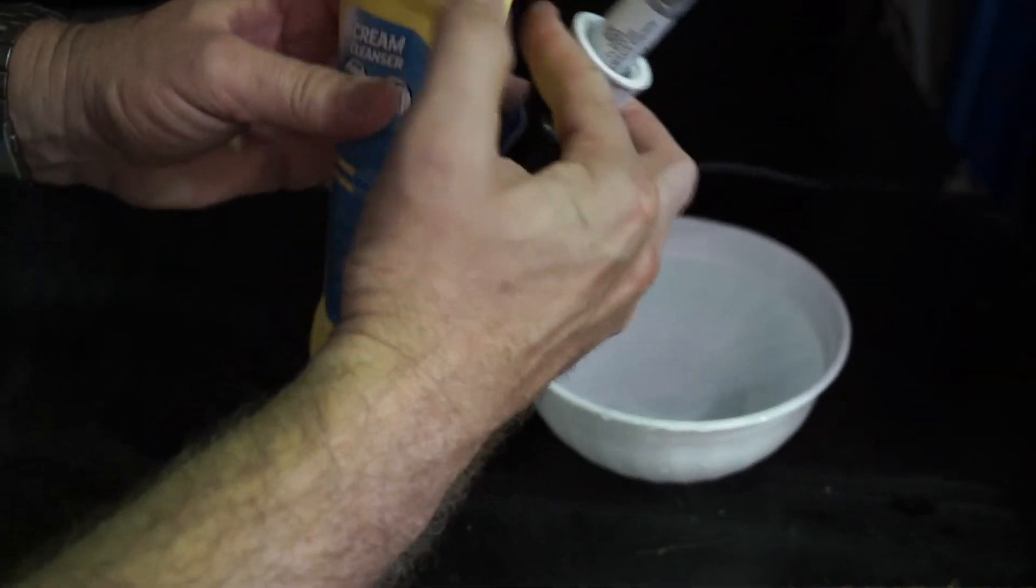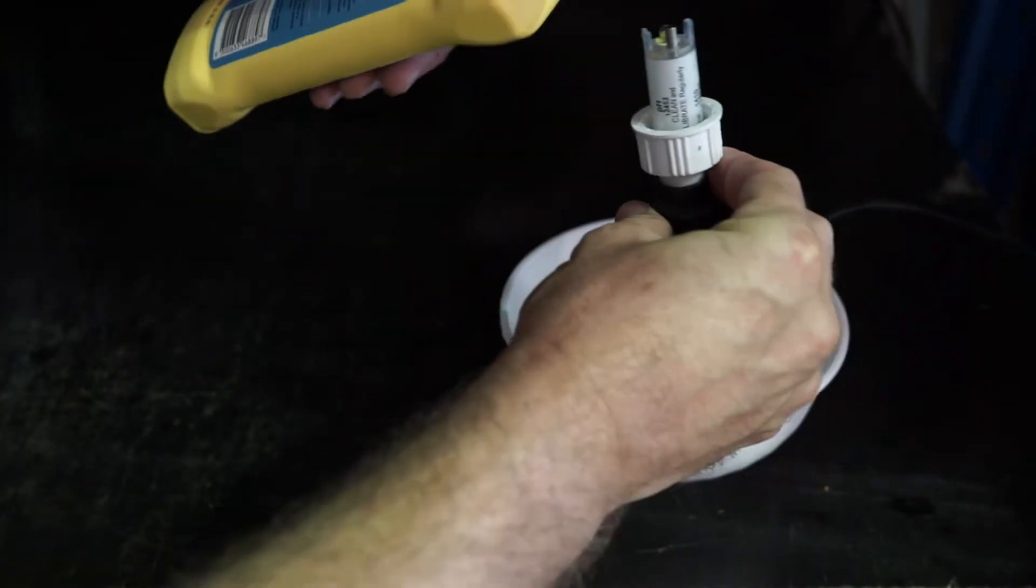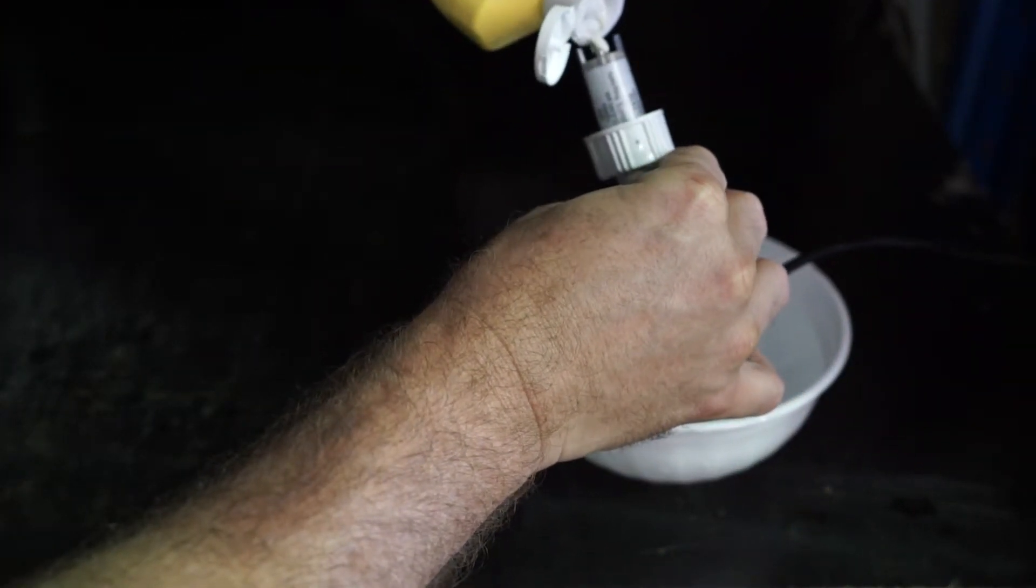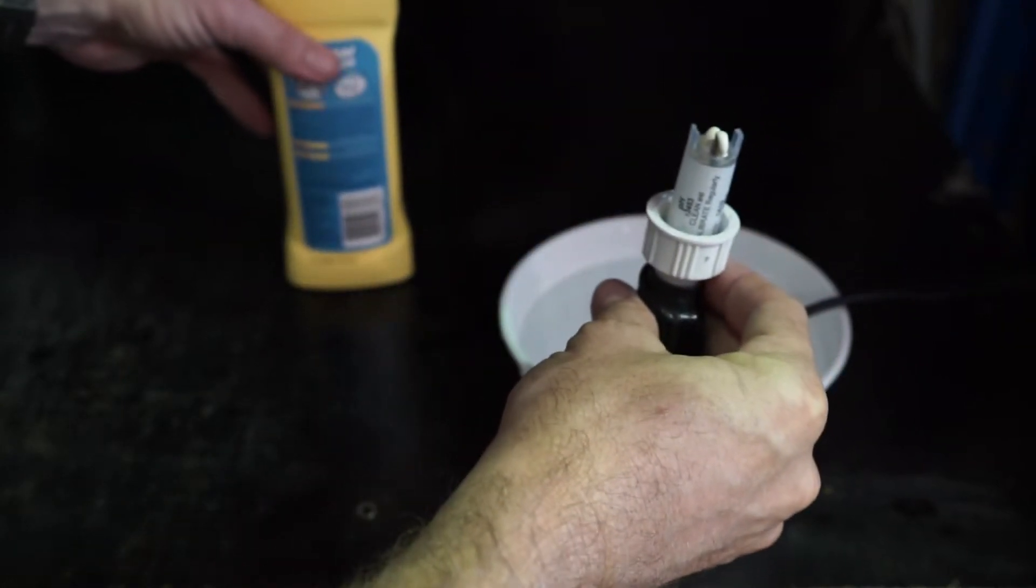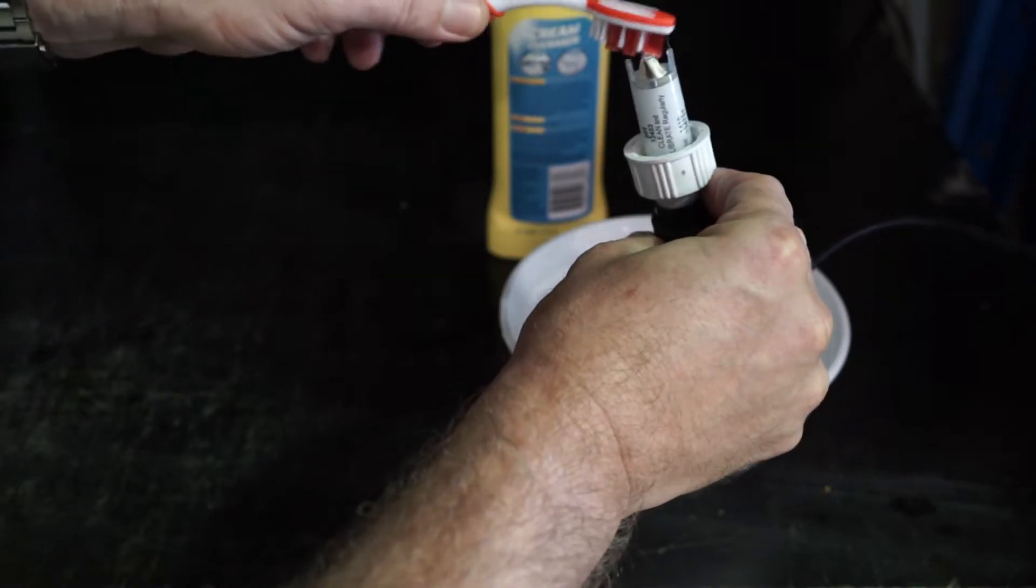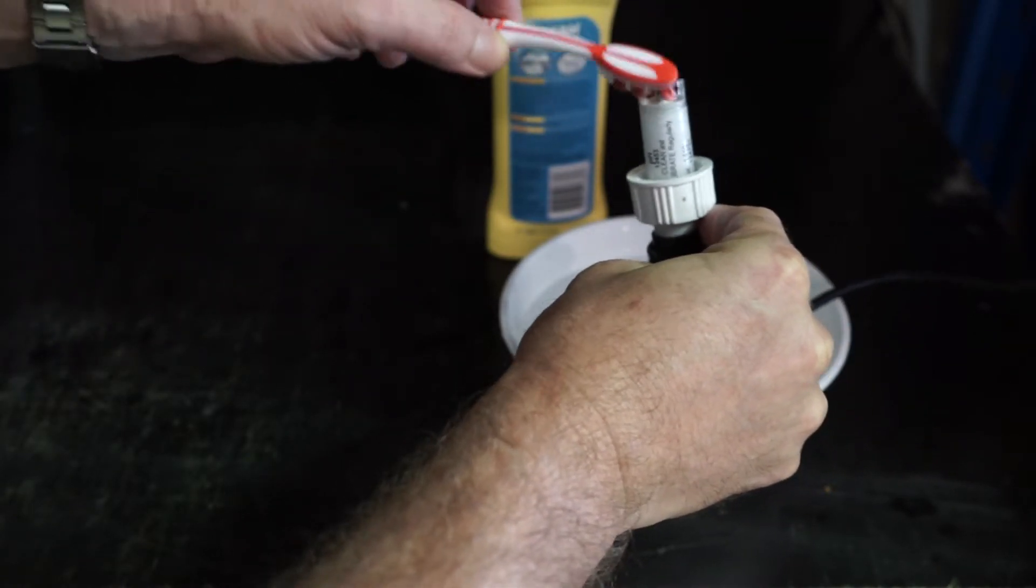So how we do that is just with some cream cleanser, a small amount on the tip of our probe, and then simply with a soft toothbrush or a cotton bud.